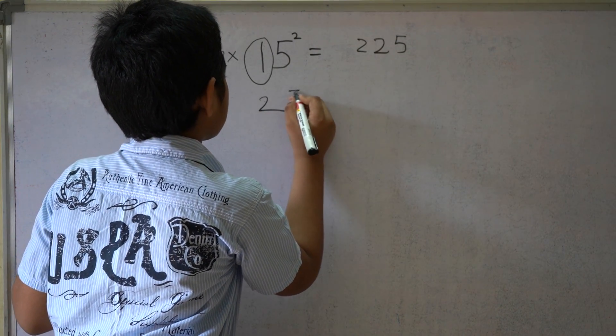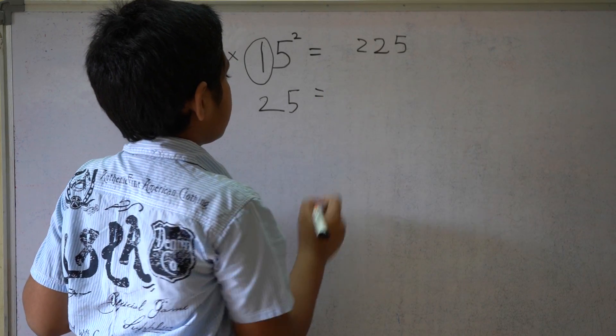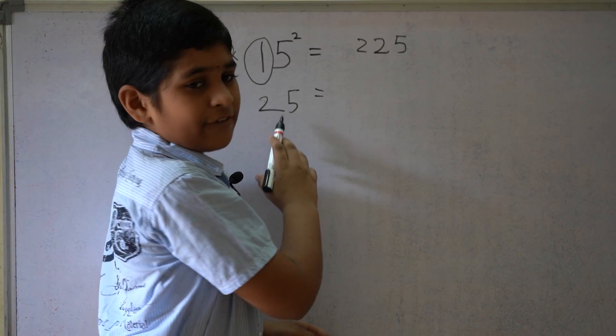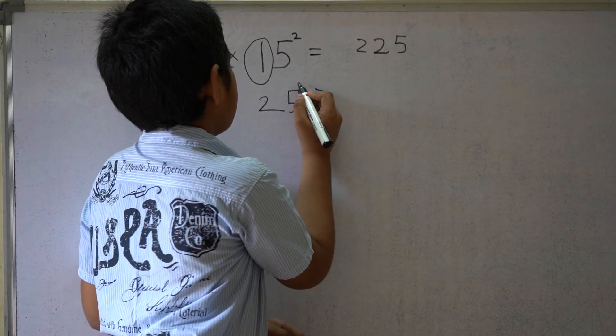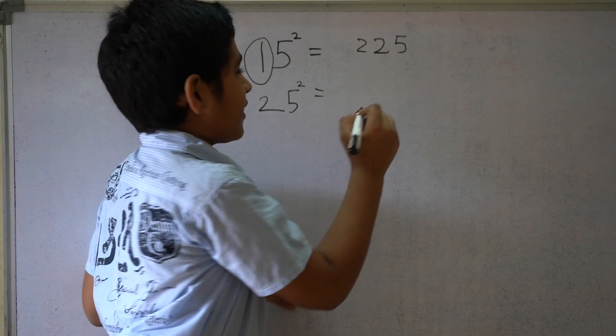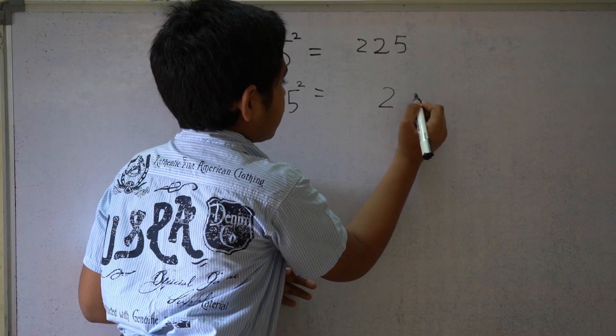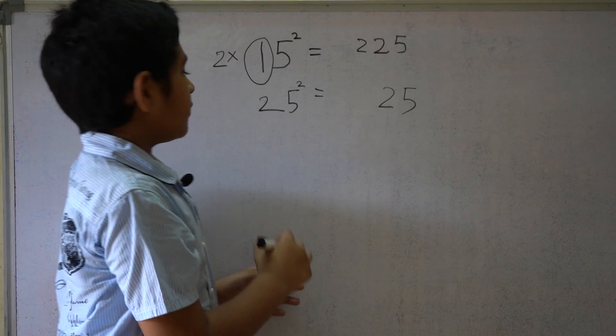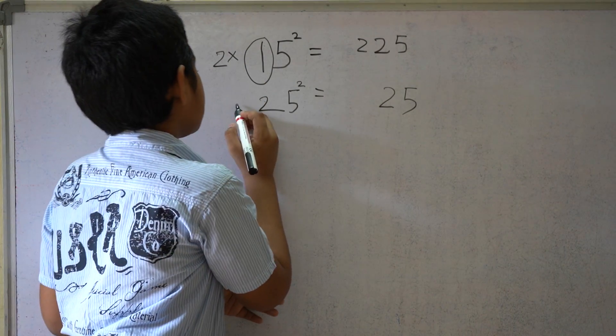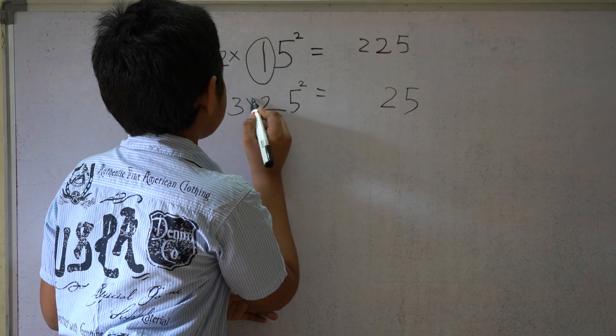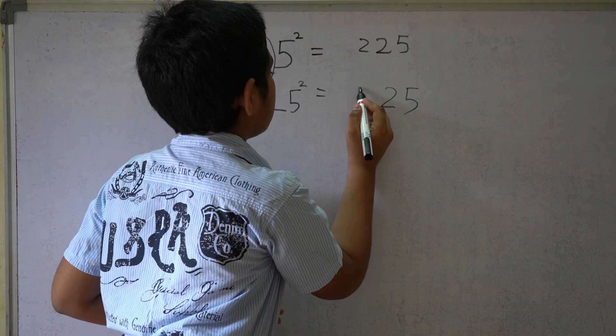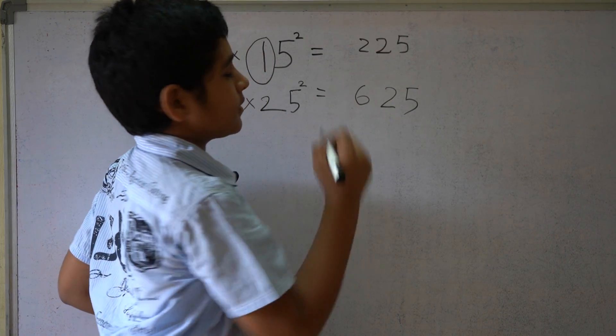25 square. 5 square equals 25. 2 times the next natural number 3 equals 6. So 625.